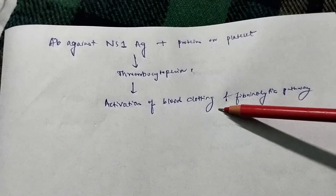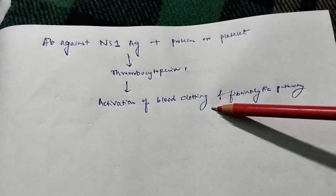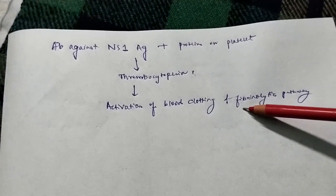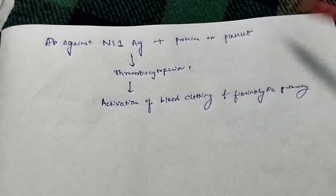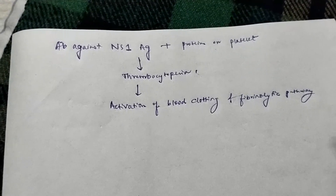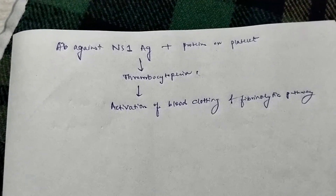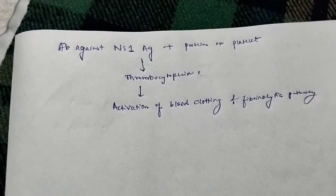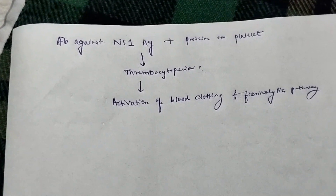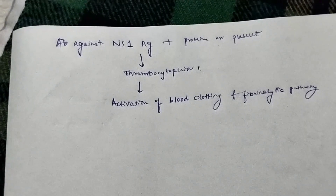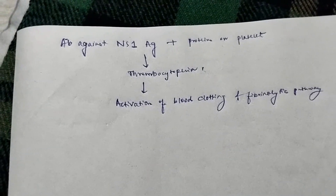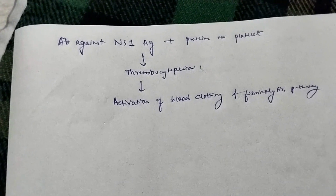There is also activation of the blood clotting and fibrinolytic pathways. This explains all four characteristics of severe Dengue: abnormal hemostasis, circulatory insufficiency, organ dysfunction, and thrombocytopenia.